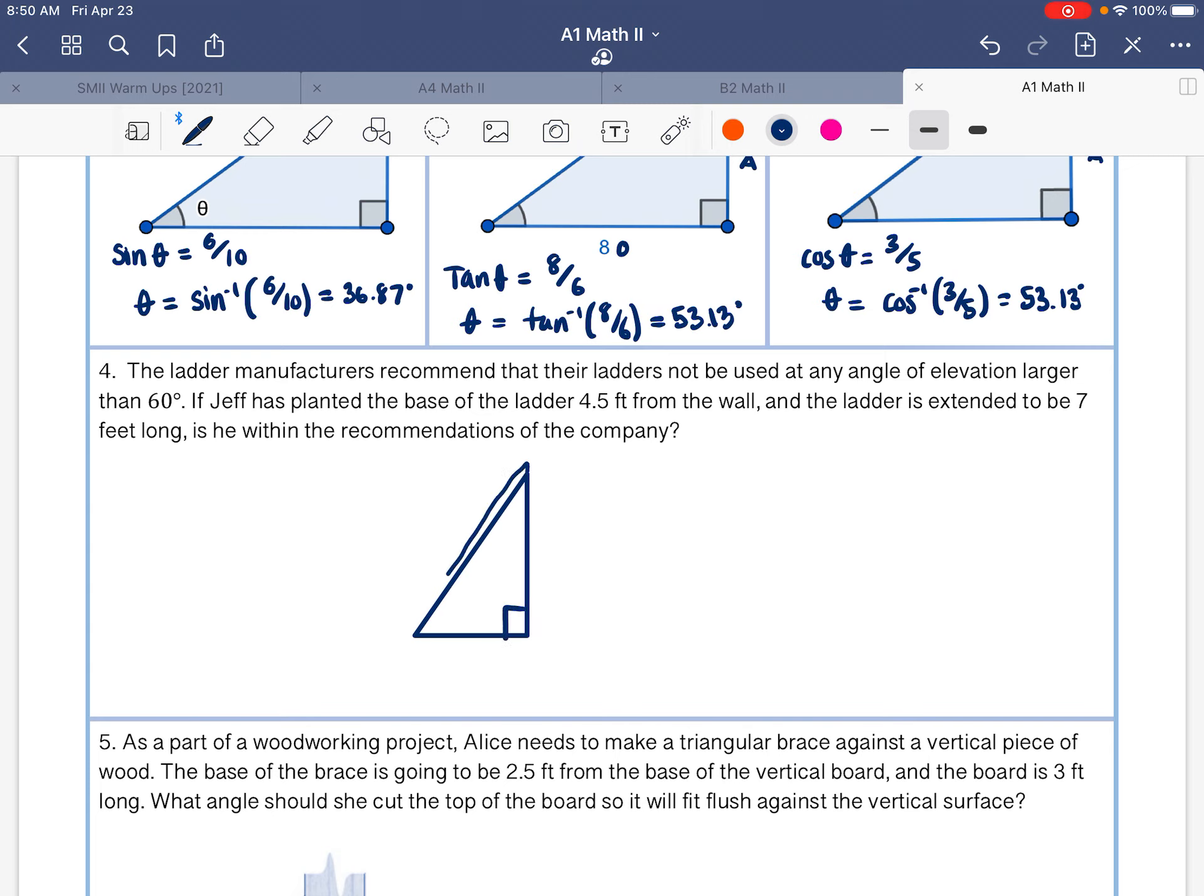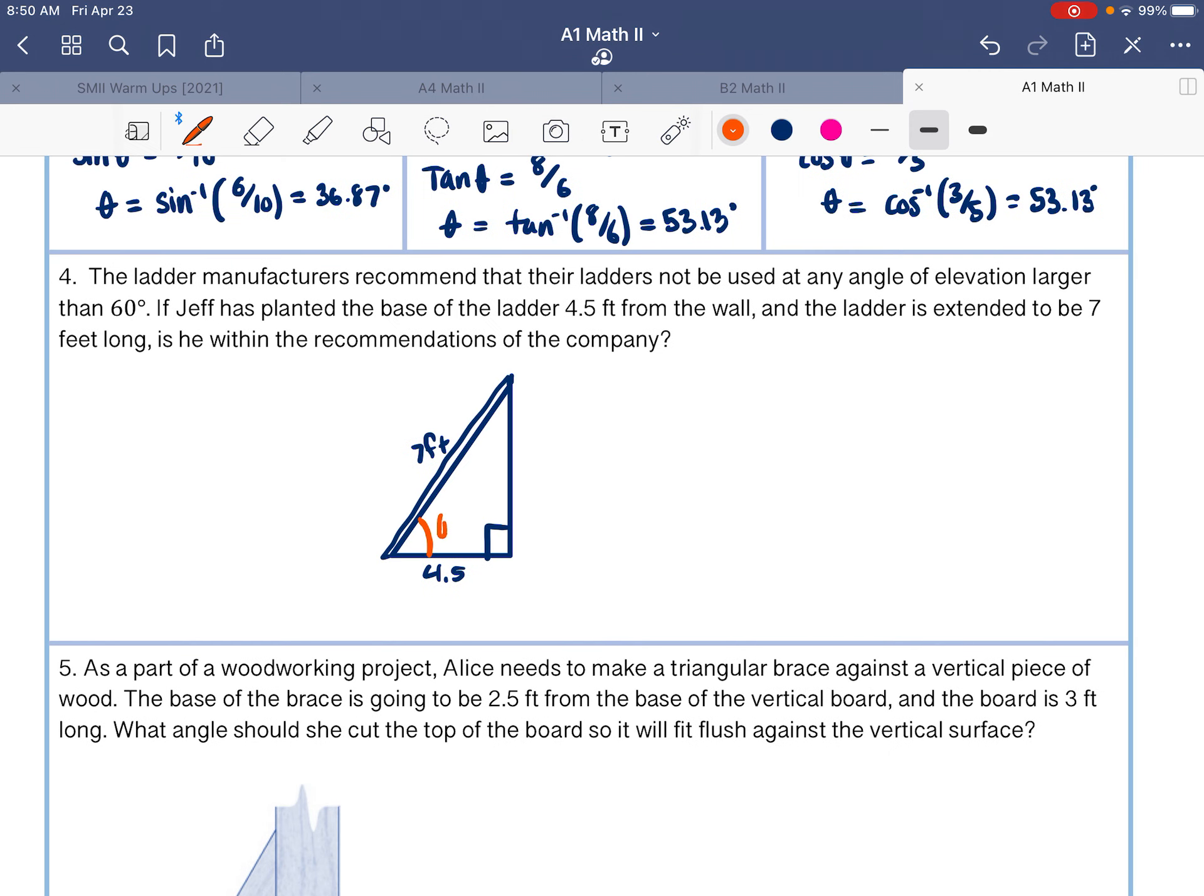And this bit is our ladder. So our ladder over here is against a wall, and it's four and a half feet from the wall. And the ladder is extended to be seven feet long. So the ladder is seven feet long. The angle of elevation here is going to be this angle. Remember, angle of elevation is an angle that's above a horizontal line. So we're wondering, is this angle bigger than 60 degrees?